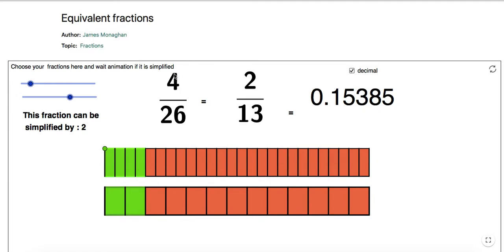So I have this fraction 4/26. The 4 represents the green here and the 26 represents the whole. And that's equivalent to 2 over 13. I have two parts here and 13 parts that make up the whole. So these proportions are exactly the same.